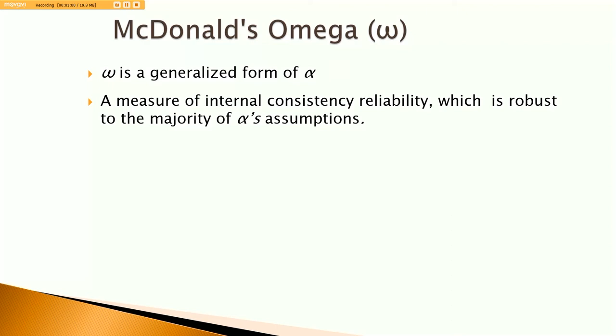So McDonald's Omega, I wouldn't say is new. It's been around for decades, but it's been widely underused in social sciences research up until perhaps recently. And what Roderick McDonald did was to develop what's called a composite reliability estimate. So McDonald's Omega is a type of composite reliability estimate. And really, Omega is a generalized form of Alpha.